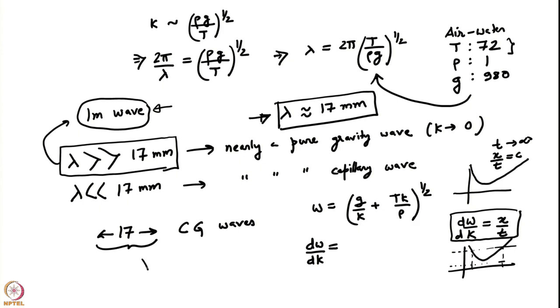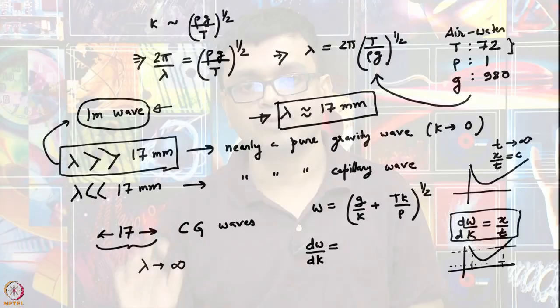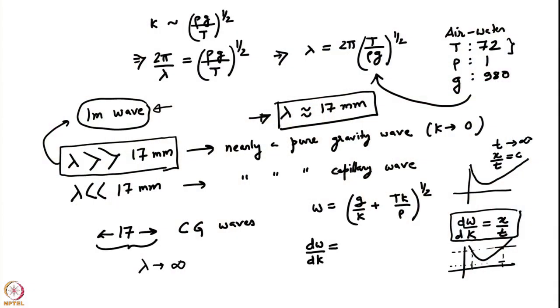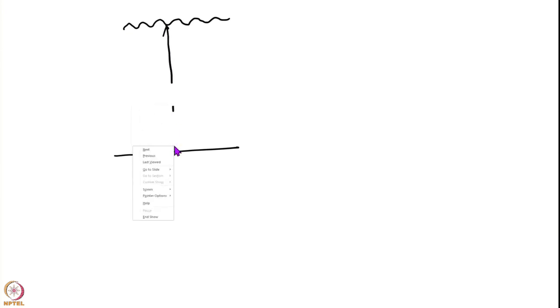As we take the limit λ going to infinity, the deep water approximation itself is going to break down. We had assumed the fluid depth is infinite, but in practice the depth is never infinite. That approximation is valid only when the wavelength of the waves is sufficiently small compared to the depth of the fluid — i.e., λ much less than h, the undisturbed depth.